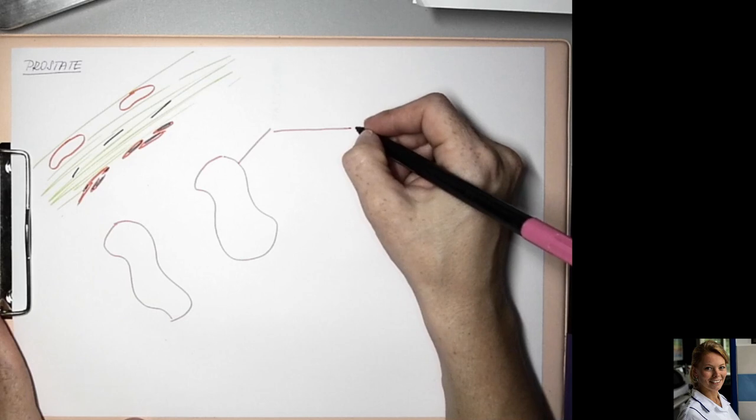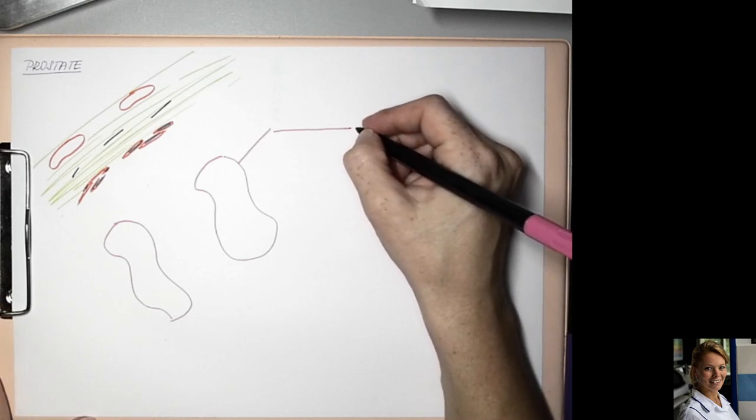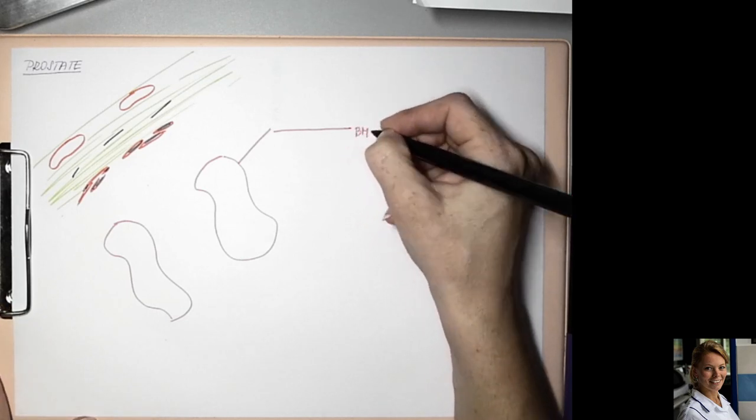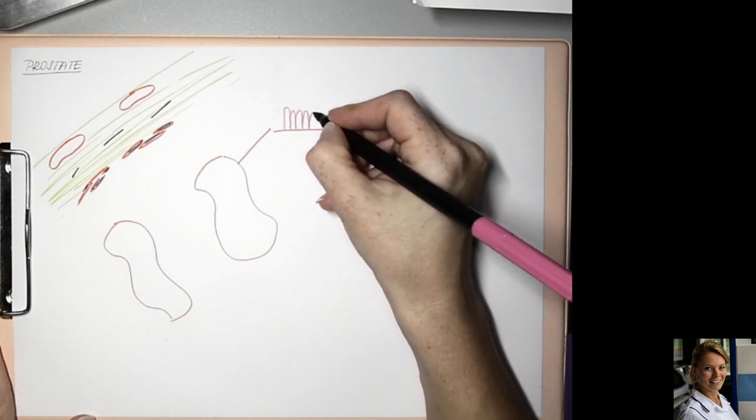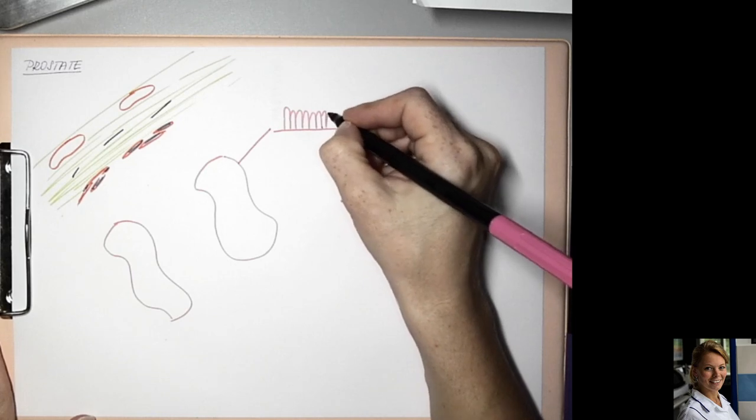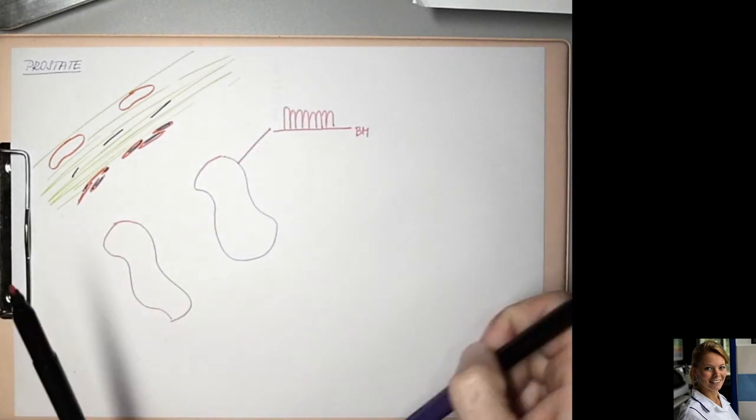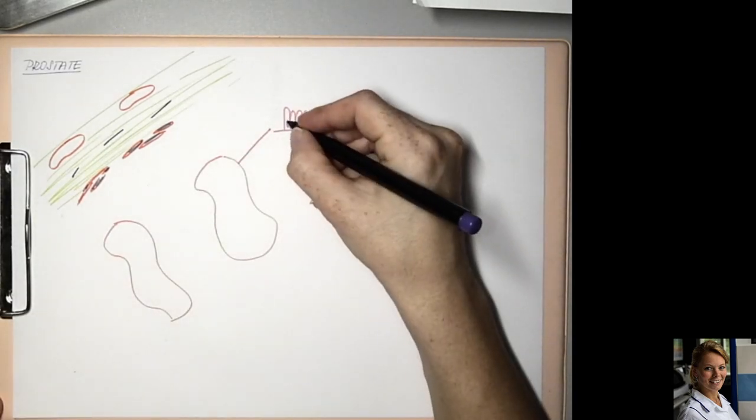Each cell has contact with the basal membrane. These are taller cells, a bit elongated nuclei.